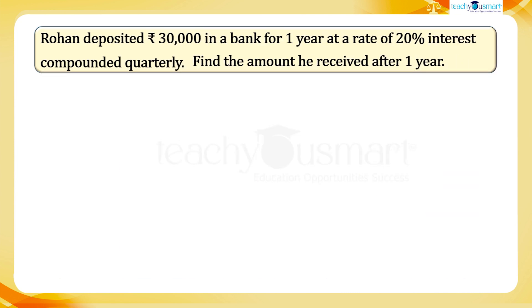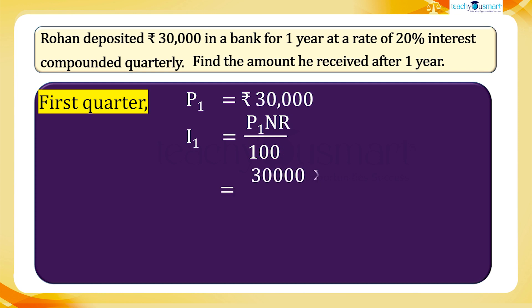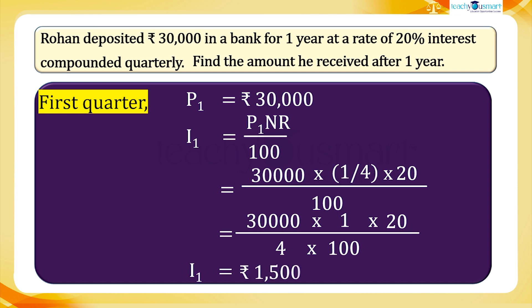Now find the interest and the amount for the first quarter. The principal for the first quarter is P1 equals 30,000 rupees. So the interest for the first quarter: I1 equals P1 × N × R divided by 100, equals 30,000 × (1/4) × 20, whole divided by 100, equals 30,000 × 1 × 20, whole divided by 4 × 100. That is, I1 equals 1,500 rupees.